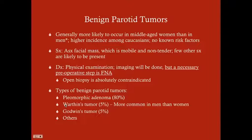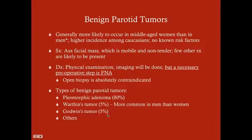The types of benign parotid tumors: the most common is pleomorphic adenoma, making up 80%. Warthin's tumor makes up about 5% and is more common in men than in women, with an association with smoking. Godwin's tumor makes up 5%, and then there are various others. The key point to remember is that pleomorphic adenoma is the most common benign parotid tumor.